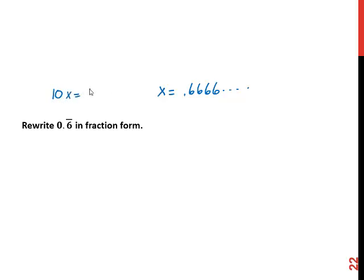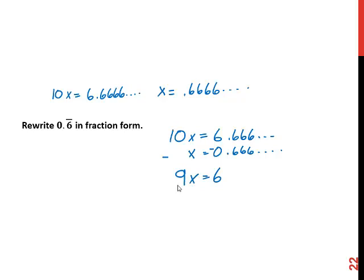And that gives me 10x equals 6 point a bunch of 6's. Now I'll subtract the original equation from my new equation. And when I do that subtraction, I end up with 9x equals 6. It's a simple matter of dividing both sides by 9, and we get x equals 6 ninths, which reduces to 2 thirds.